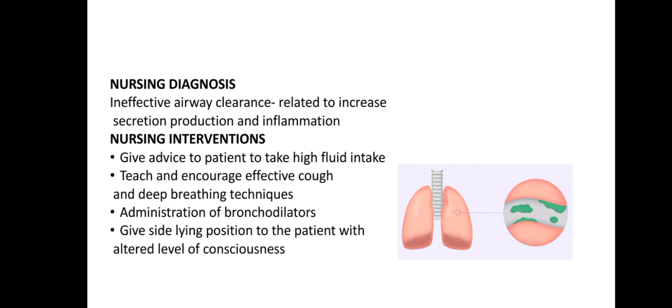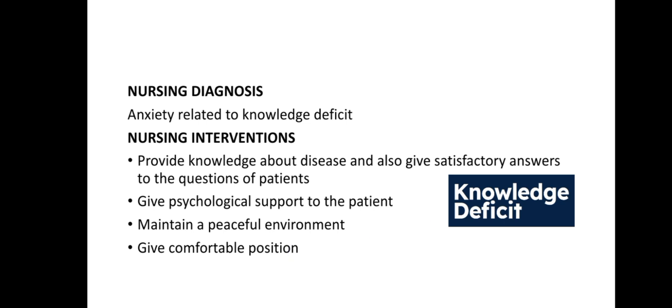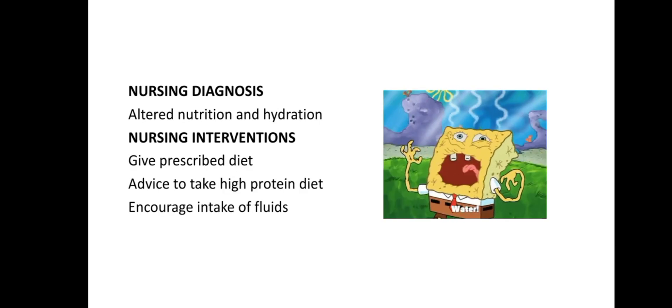Nursing diagnosis 2: ineffective airway clearance related to increased secretion production and inflammation. Interventions include: advising high fluid intake, teaching and encouraging effective cough and deep breathing techniques, administration of bronchodilators, and positioning the patient in the sidelying position if altered level of consciousness is present. For nutrition and hydration, provide a prescribed diet and encourage high protein intake and fluid intake.